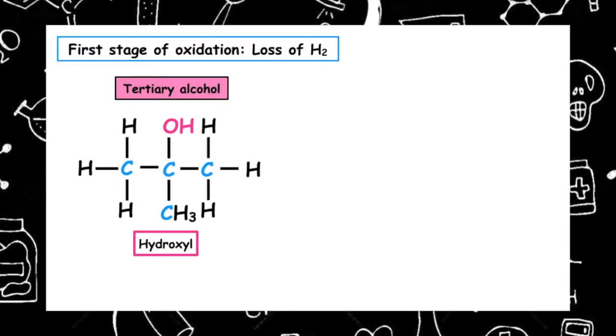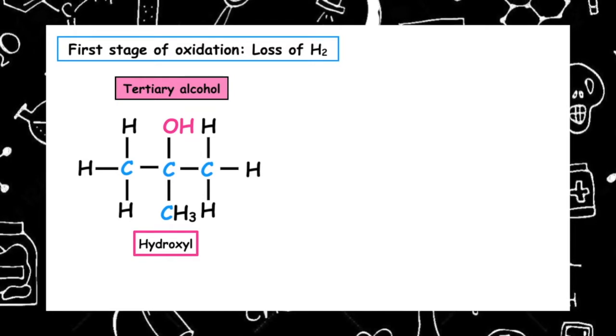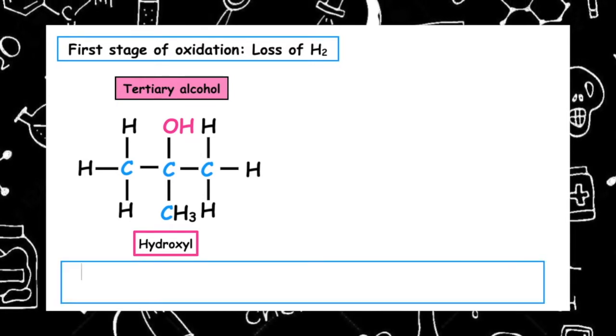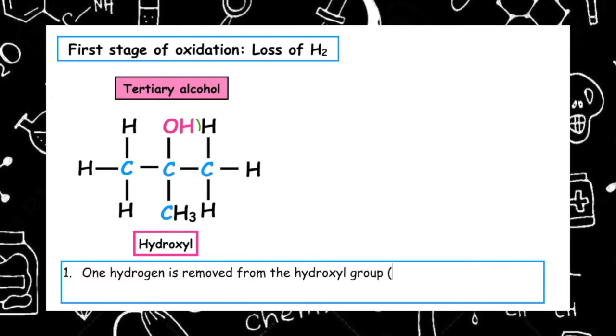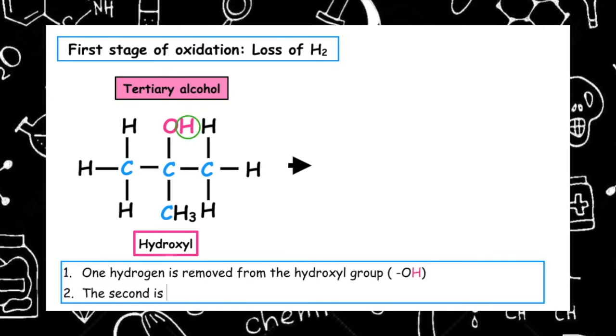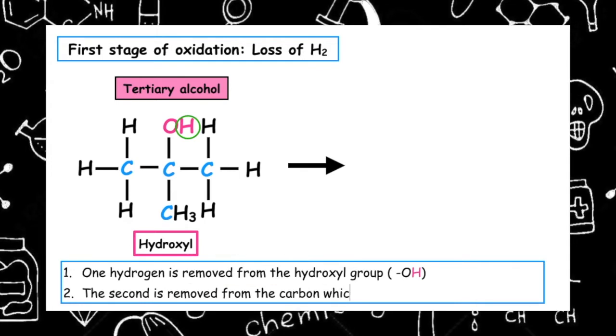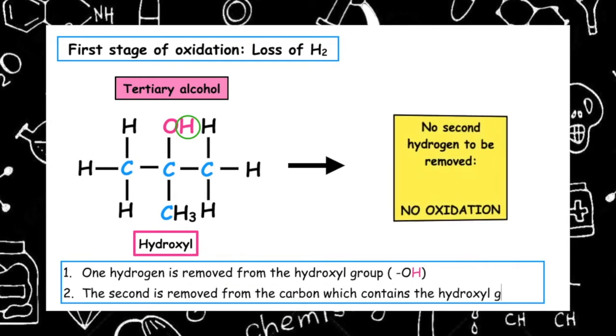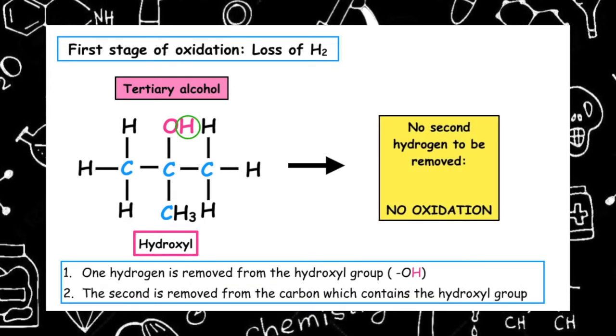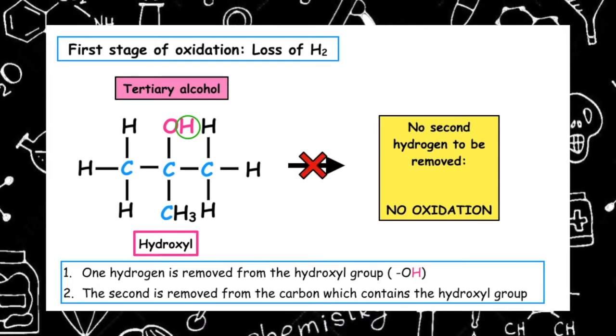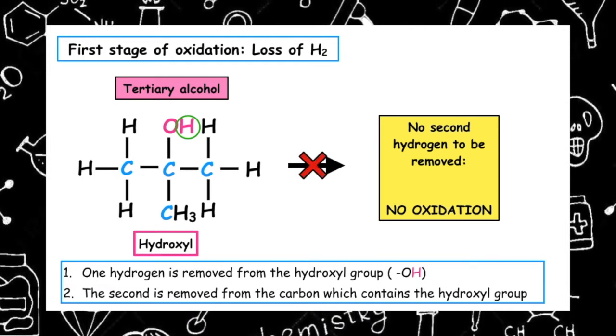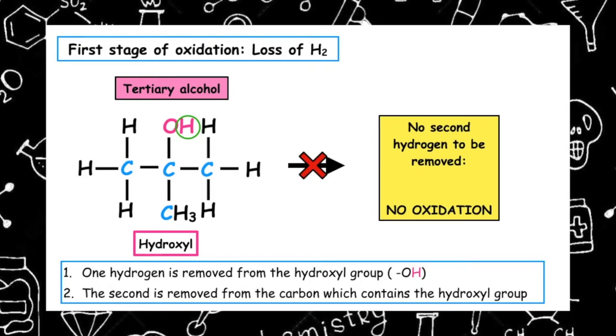The first stage of oxidation is the loss of hydrogen. One hydrogen is removed from the hydroxyl group and the second is removed from the carbon which contains the hydroxyl group. What we can see is there's no hydrogen directly attached to the carbon which contains the hydroxyl group, so no second hydrogen can be removed. Therefore, no oxidation takes place.